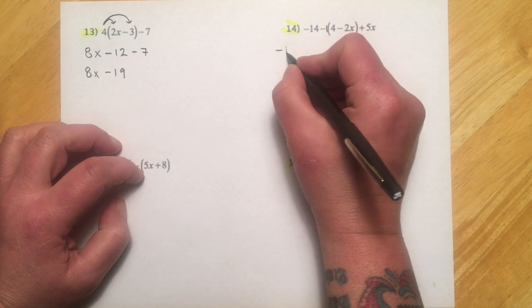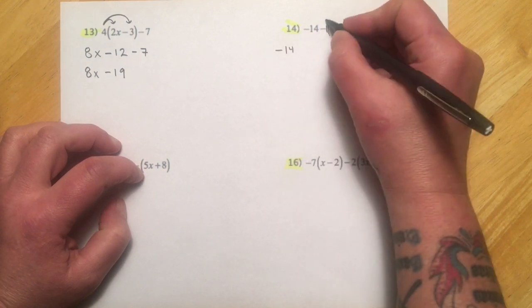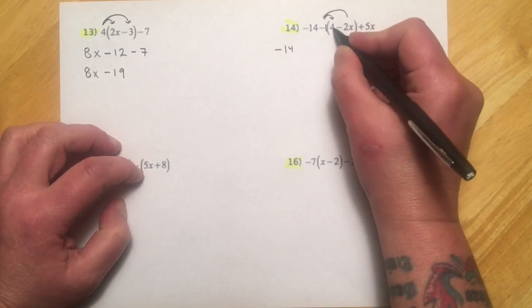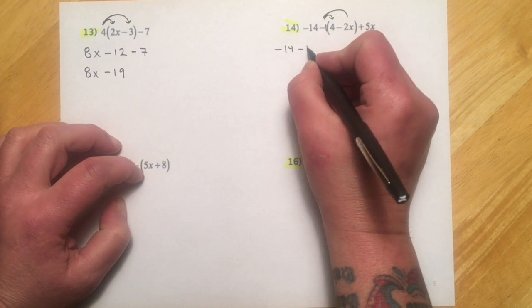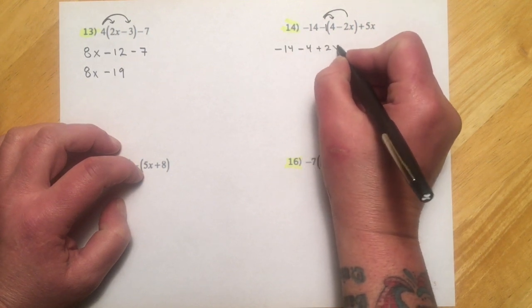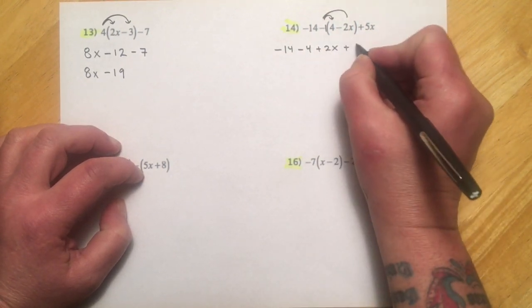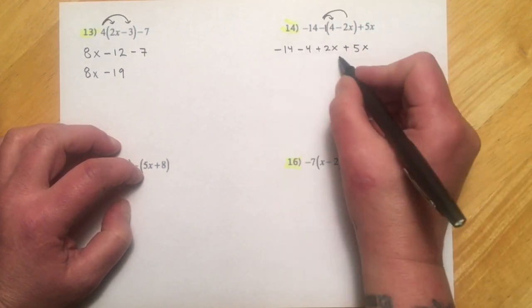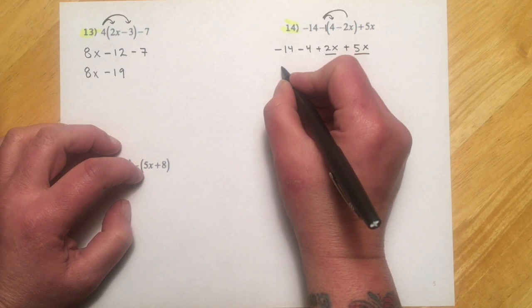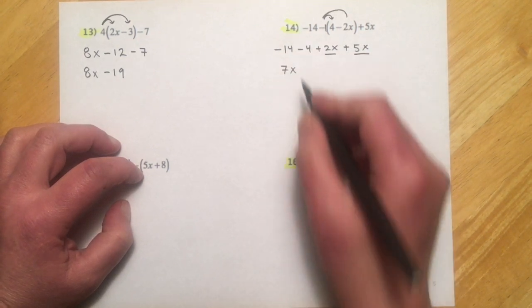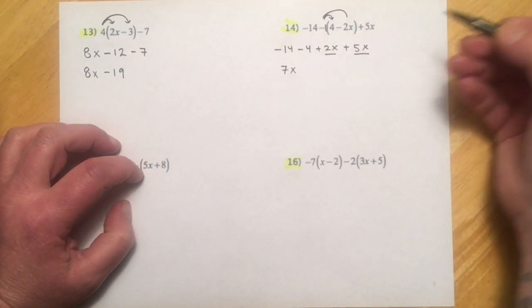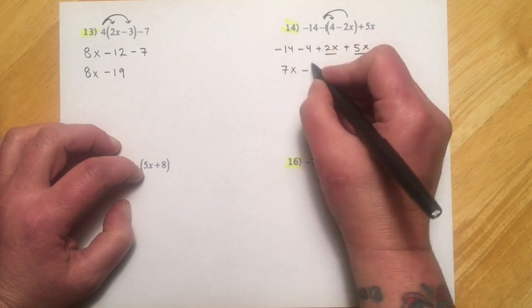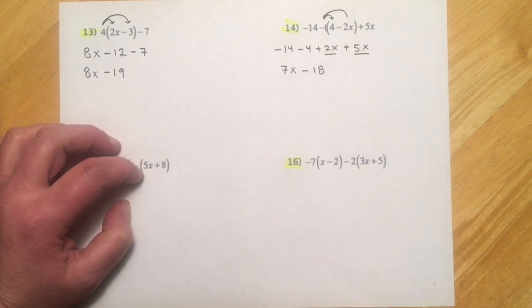Here, there's that little invisible negative 1. So we'll go negative 14. And then this distributes through. It's just going to flip-flop the signs. And so now that's a minus 4 and a plus 2x and a plus 5x. So again, kind of like our x's first, so I'll go 2x and 5x for 7x. Down 14, down another 4. So we're going farther in the hole. So that'll be minus 18.